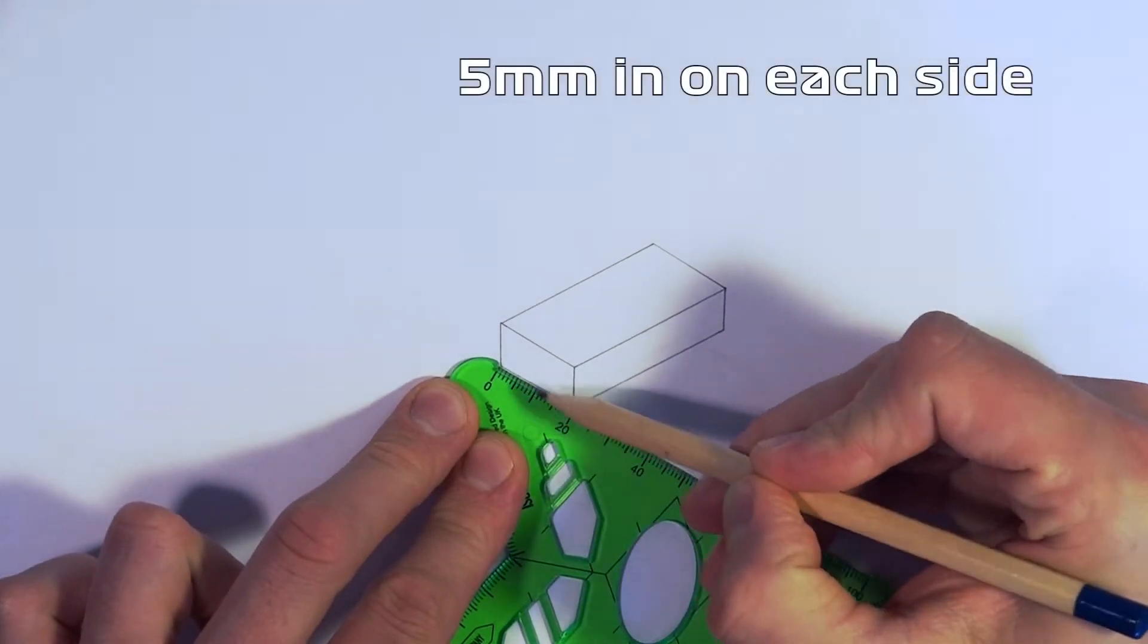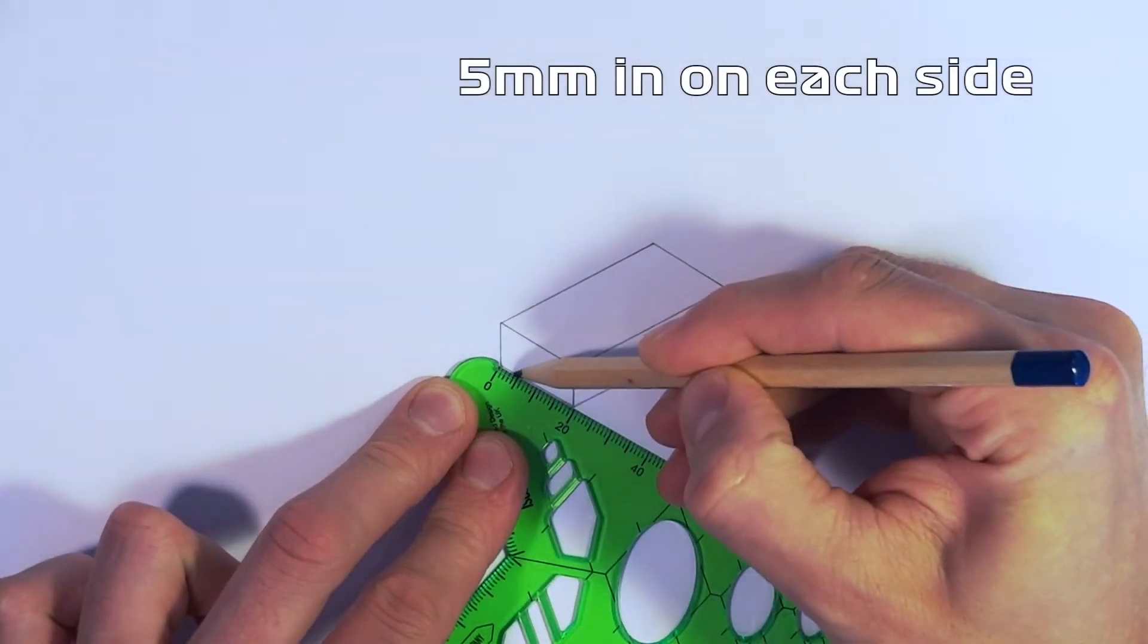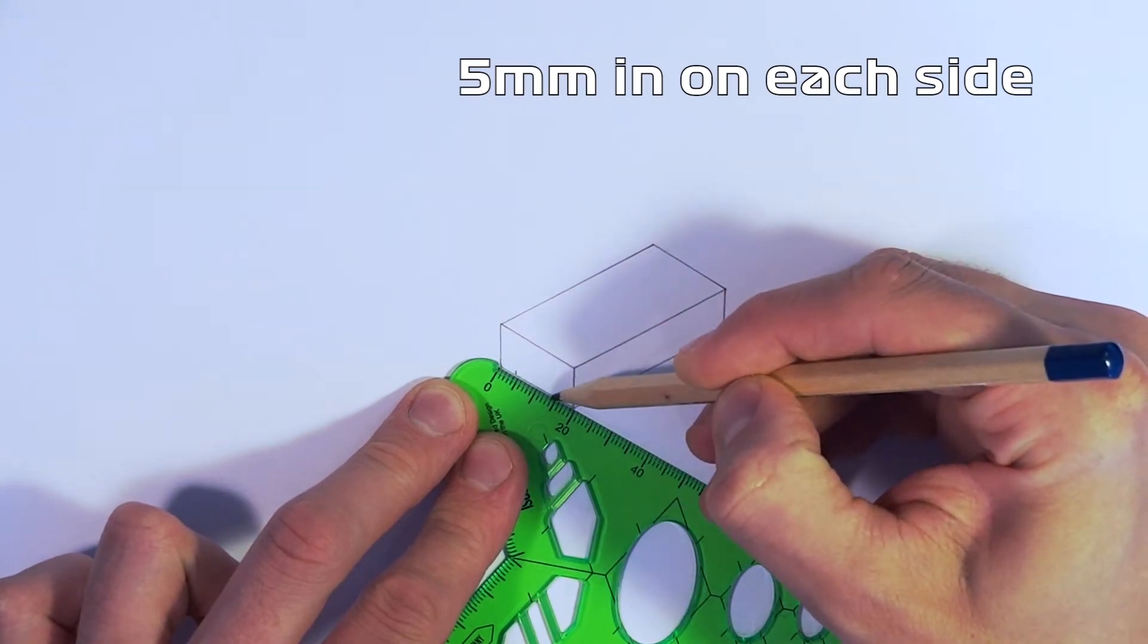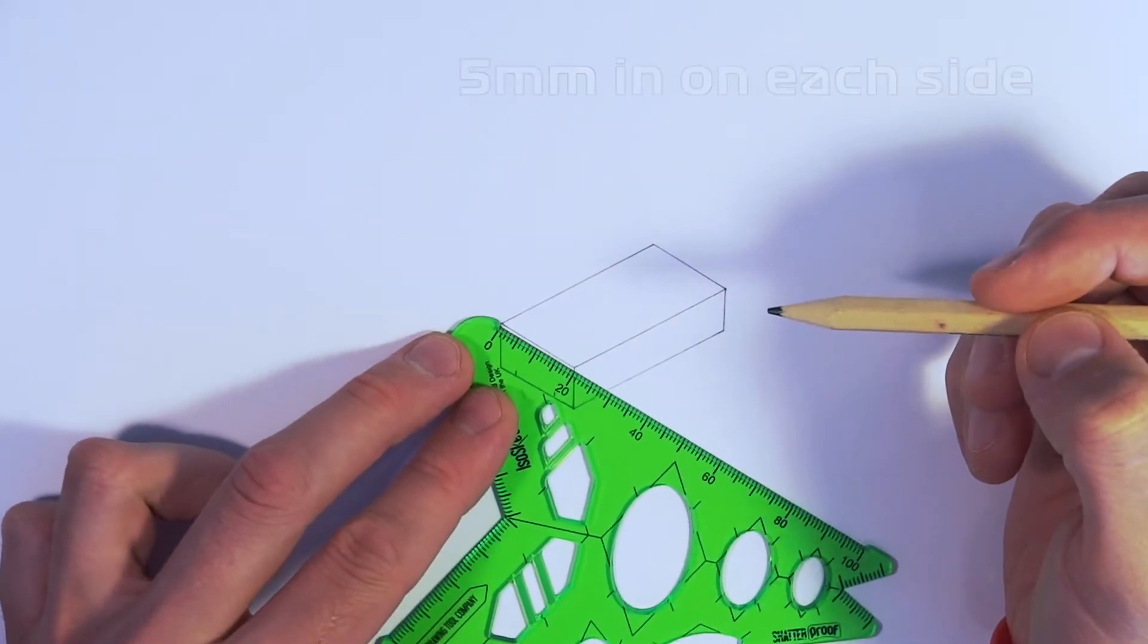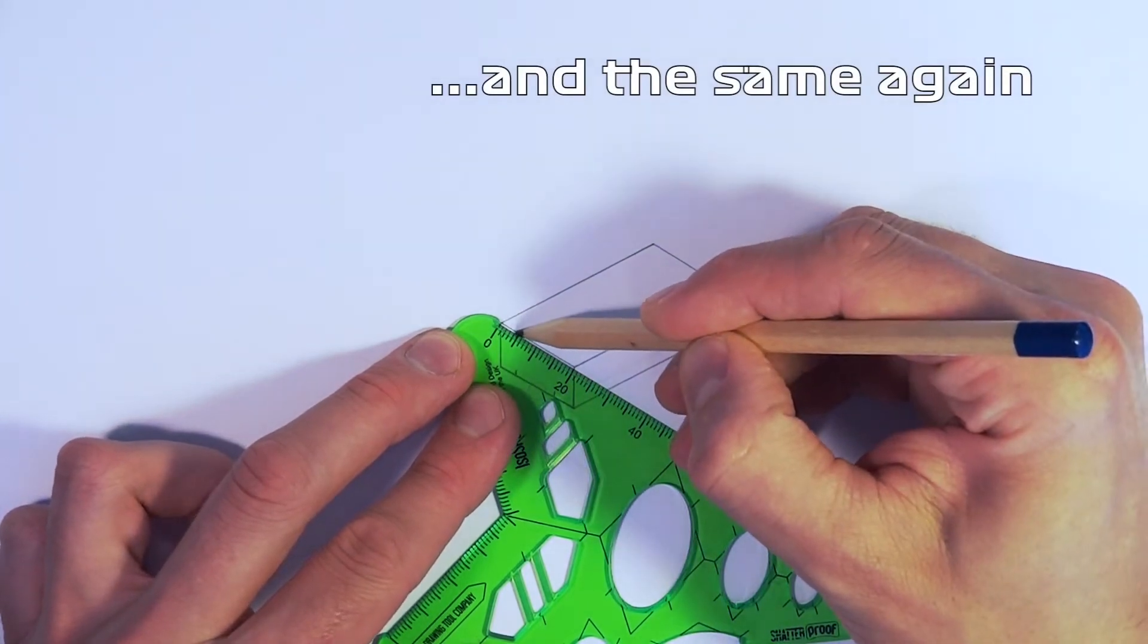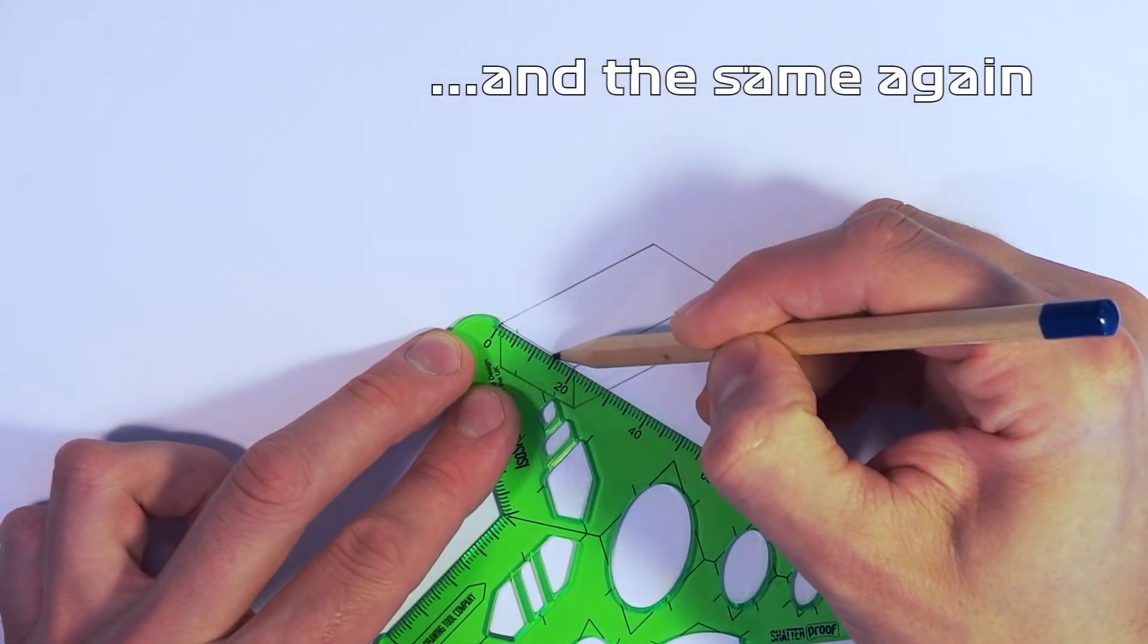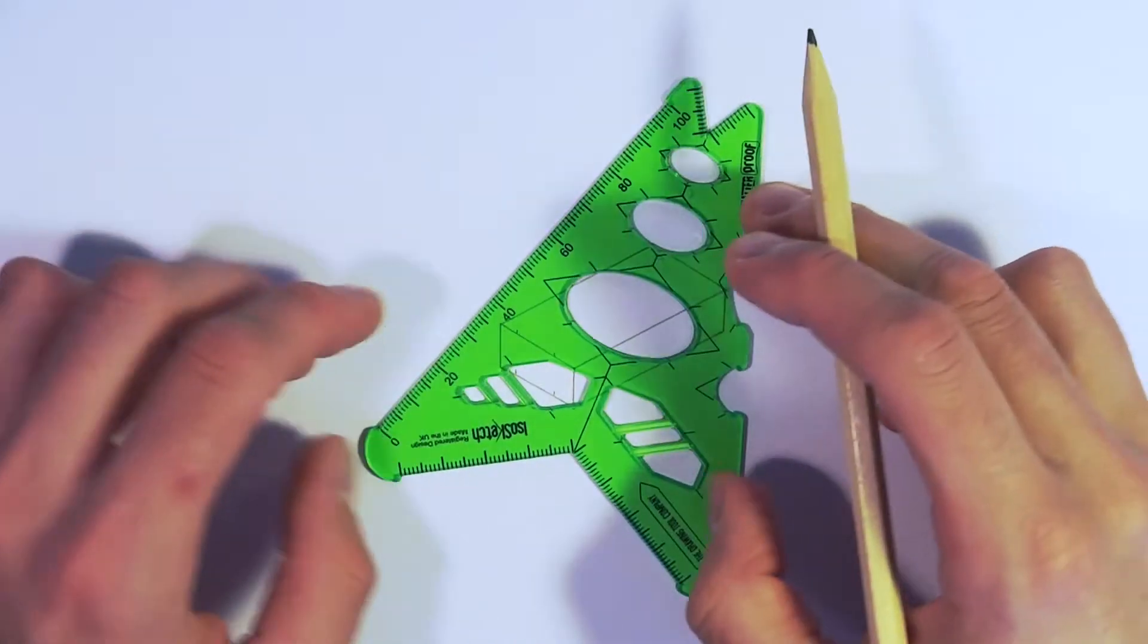What we're going to now do is mark five millimeters in from each side on this bottom line here, so just using the ruler edge marking five millimeters in on both these lines, so the top and the bottom of this end of our chassis block at the moment.